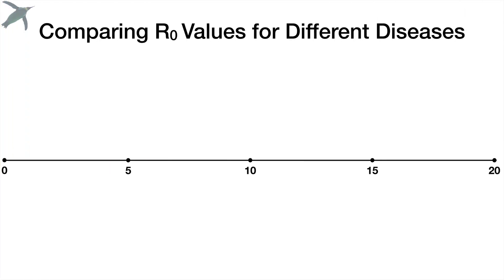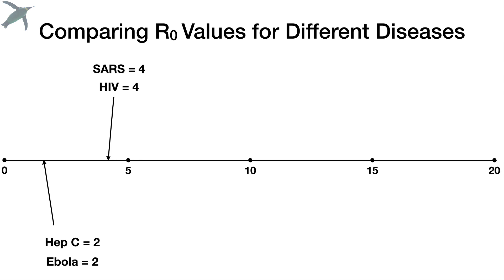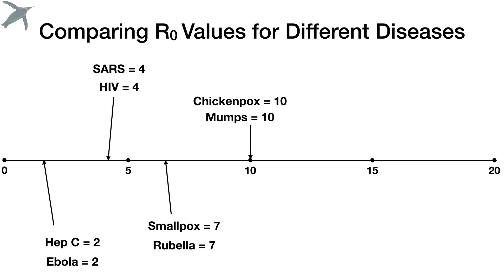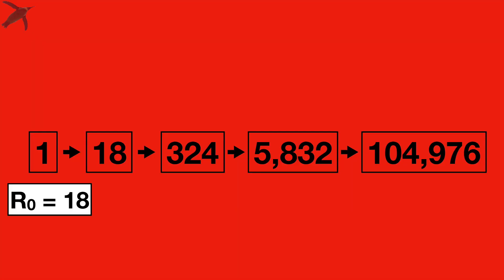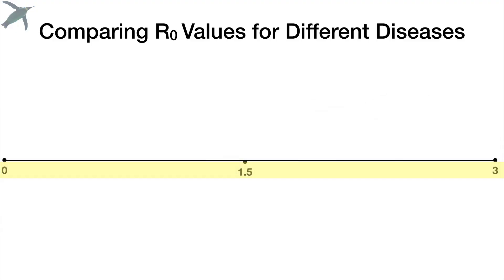Let's put this in context and look at some different R-naught values for different diseases. I got these data from the CDC website — they have great historical data, and these are averages. Hepatitis C and Ebola — I'm talking about the 2014 Ebola epidemic — have R-naught reported around two. SARS and HIV are around four. Smallpox and rubella are seven. Chickenpox and mumps are 10. Measles is as high as 18. I'm also expanding the lower end of this line so we can look at some more diseases.